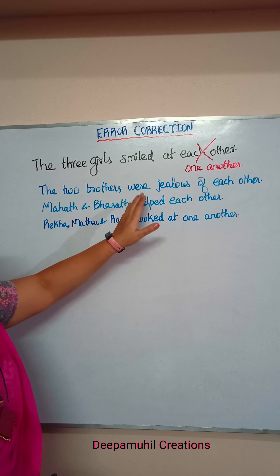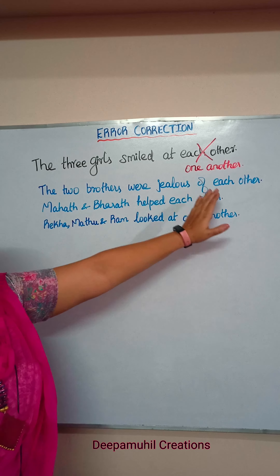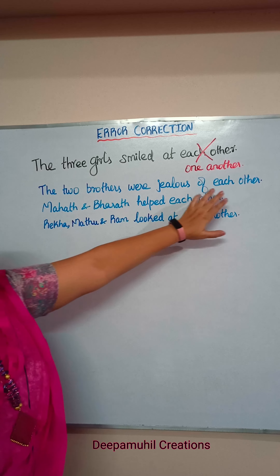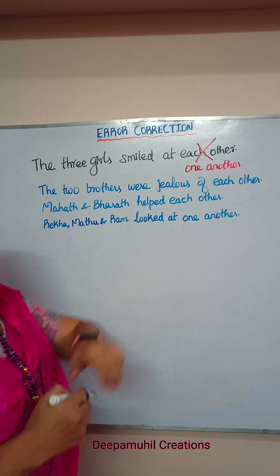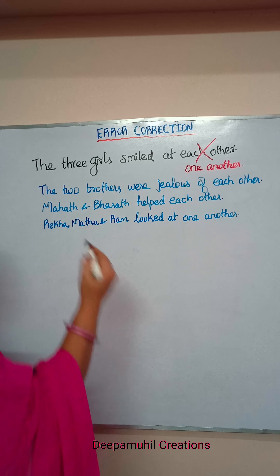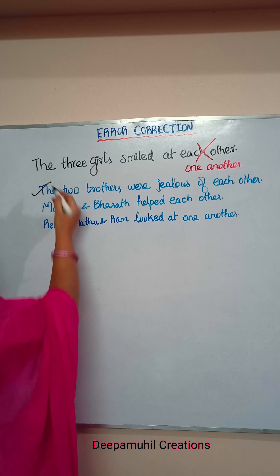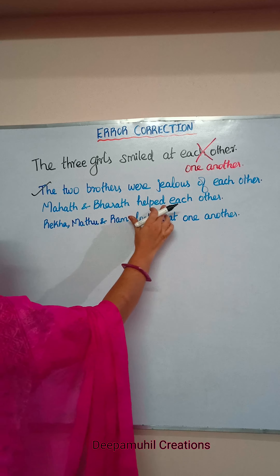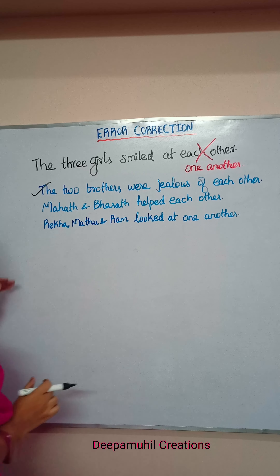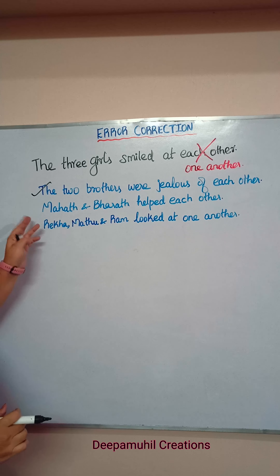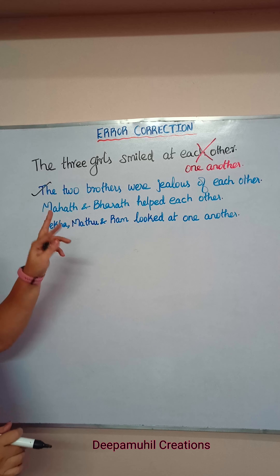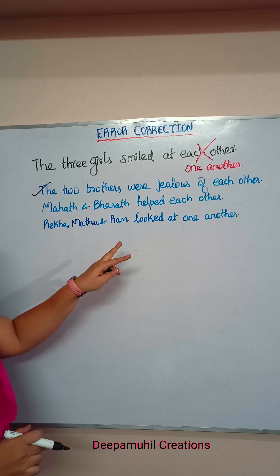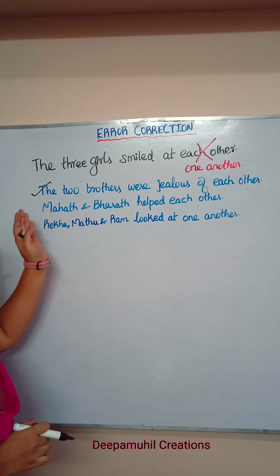Here is an example: 'The two brothers were jealous of each other.' Here we have two brothers, so we use 'each other.' Another example: 'Mahath and Bharath hurt each other.' Mahath and Bharath are two persons, so we use 'each other.'